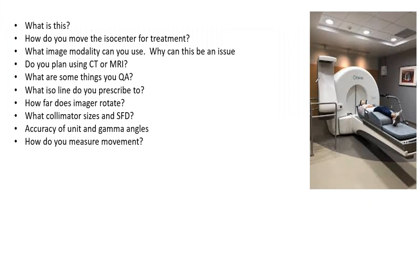During your exam, let's say you see an image like we do here to the right and are asked: what device is this? How would you move the ISO center for treatment? What image modality can you use? And why could these potentially be an issue? Do you plan with CT or MRI? What are some things you QA? What ISO line do you prescribe to? How far does the imager rotate on specifically the Icon? What collimator sizes and SFDs are available, accuracy of unit and gamma angles, and how do you measure movement?